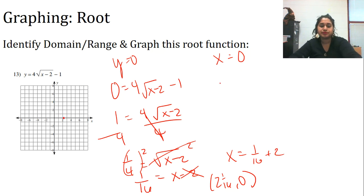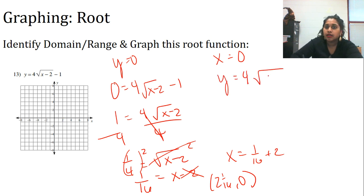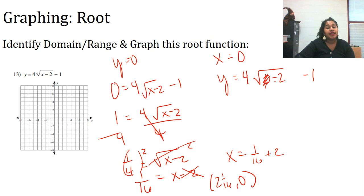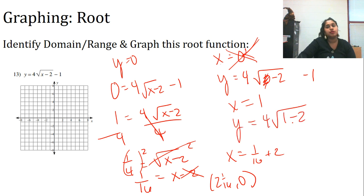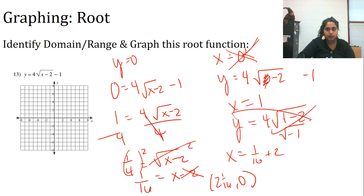On the x = 0 side: 0 - 2 = -2 under the root, giving √(-2) — which cannot exist. So at x = 0, we have an impossible imaginary point. Testing x = 1: 1 - 2 = -1 under the root, still negative — still can't square root -1. So there's a restriction at both x = 0 and x = 1.